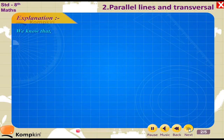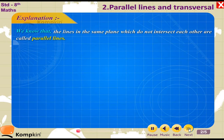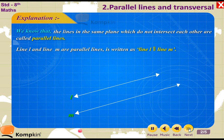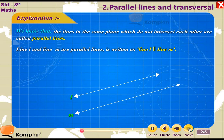We know that lines in the same plane which do not intersect each other are called parallel lines. Line L and line M are parallel lines, written as line L parallel to line M.